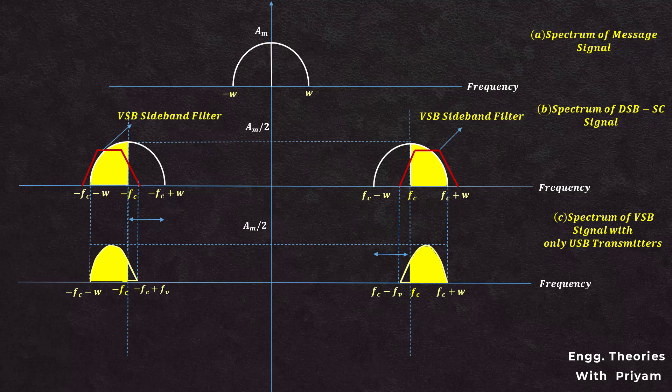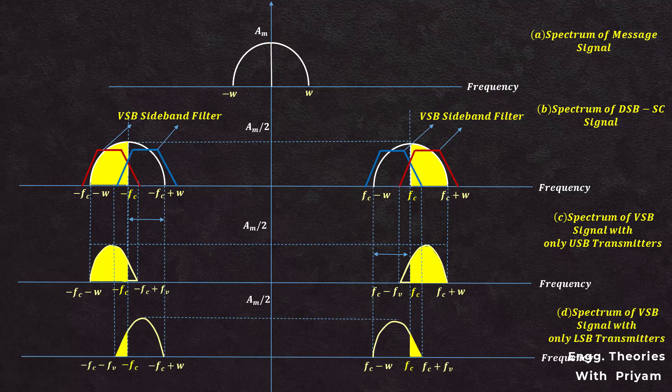The bandwidth of the VSB sideband filter is (fc+W) − (fc−fv) = fv+W. If the VSB sideband filter has a response for the lower sideband with the vestige of the upper sideband, then the portion from fc to fc+fv is the vestige of the upper sideband. By passing the DSB-SC signal through the VSB sideband filter we can generate the VSB modulated signal for both upper and lower sideband cases.